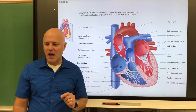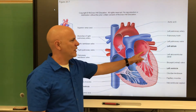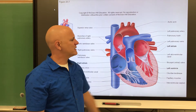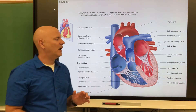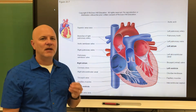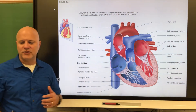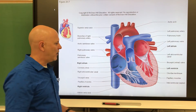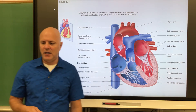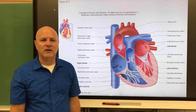The right atrium receives blood returning from the body and pushes it into the right ventricle. The left atrium receives blood returning from the lungs — oxygenated blood, indicated by red — and pushes it down into the left ventricle. Note that red indicates high oxygenation and blue indicates low oxygenation, not the actual color of the blood. The ventricles are chambers that force blood out of the heart, divided by the interventricular septum. The right ventricle pumps blood to the lungs; the left ventricle pumps blood out to the body.